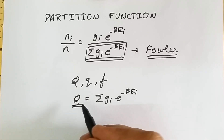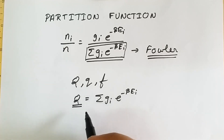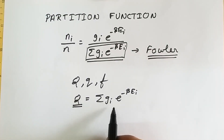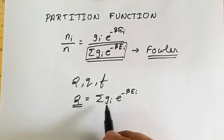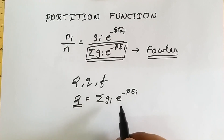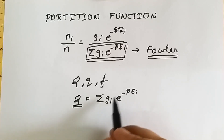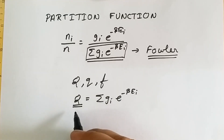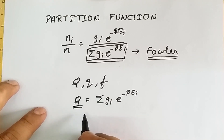The detailed derivation of all those thermodynamic properties in terms of partition functions we are going to discuss in future lectures. Quantitatively speaking, the partition function tells us how particles are distributed among various energy levels, and it is a measure of available energy levels. With this term, we can find out how n number of particles in a system are distributed among several energy levels.